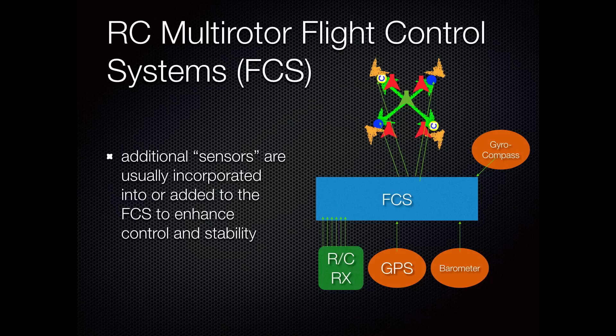Other sensors can include such things as barometers or gyro compass or you name it, to help aid the flight control system do its job.